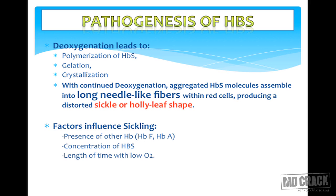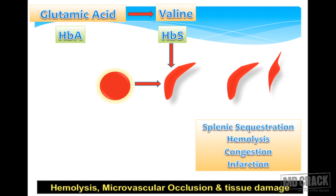What are the factors that influence sickling? Hemoglobin F (fetal hemoglobin) is said to protect against sickling. The higher the concentration of hemoglobin S, the more severe the disease. The longer the duration of low oxygen supply — that is, more deoxygenation — the more will be the sickling and the more will be the complications.